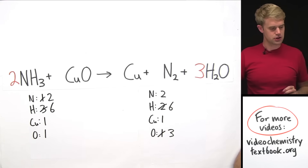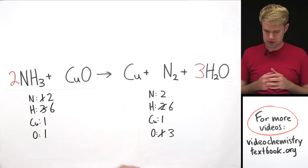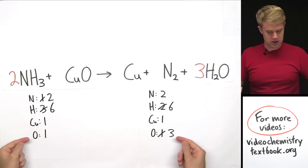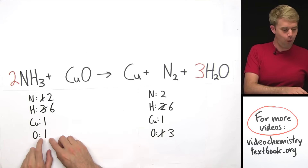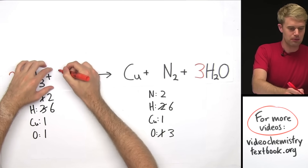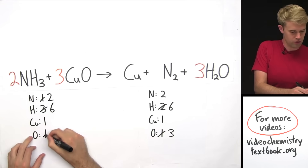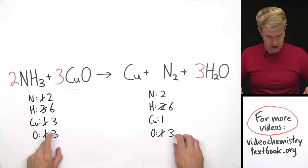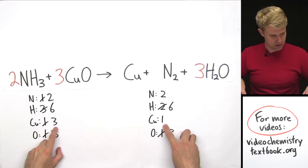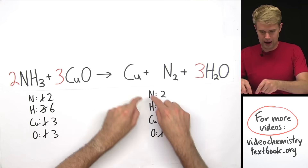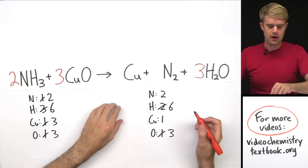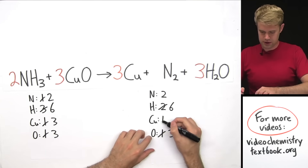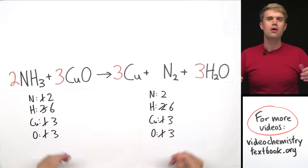I multiply the left side by two and the right side by three. That gives me two times three giving six hydrogens and two nitrogens on the left, and three times two giving six hydrogens and three oxygens on the right. Now I balance the oxygens — I have three on the right and one on the left — so I multiply by three, giving three oxygens and three coppers. Copper is then three on the right but one on the left, so I put a three in front of copper giving three times one equaling three — and now it all balances.